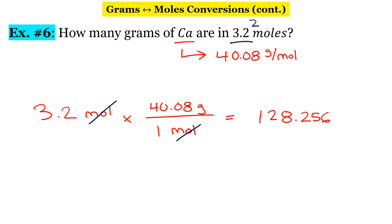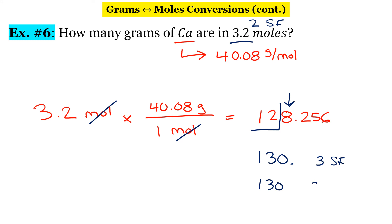3.2 times 40.08 gives us 128.256. We have two significant figures in the original number, so we need two significant digits in our final answer. Underline the first two significant digits and look at the third — we round up to 130. We leave the decimal off; including a decimal would make it three sig figs. So our final answer is 130 grams. That is converting between moles and grams.